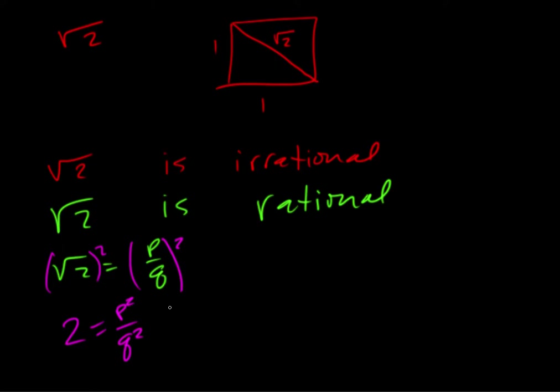Okay, we'll clear the fraction, so we'll multiply both sides by q squared. So we have 2q squared equals p squared. Now this has to be an even number, so p squared must be even because if we have two times anything it's going to be even.